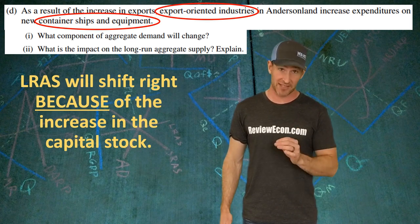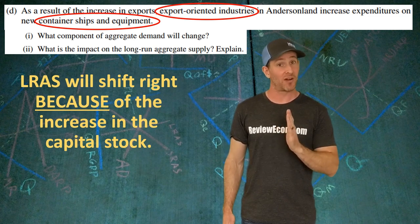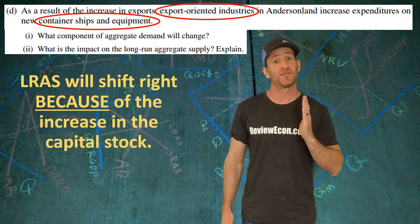In the long run, this economy will produce more output at any price level. That means the long run aggregate supply curve is going to shift to the right.